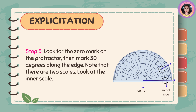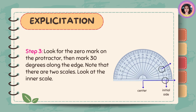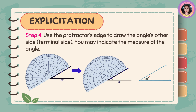Step 3: Look for the zero mark on the protractor, then mark 30 degrees along the edge. Note that there are two scales — look at the inner scale. Step 4: Use the protractor's edge to draw the angle's other side, or the terminal side. You may indicate the measure of the angle.